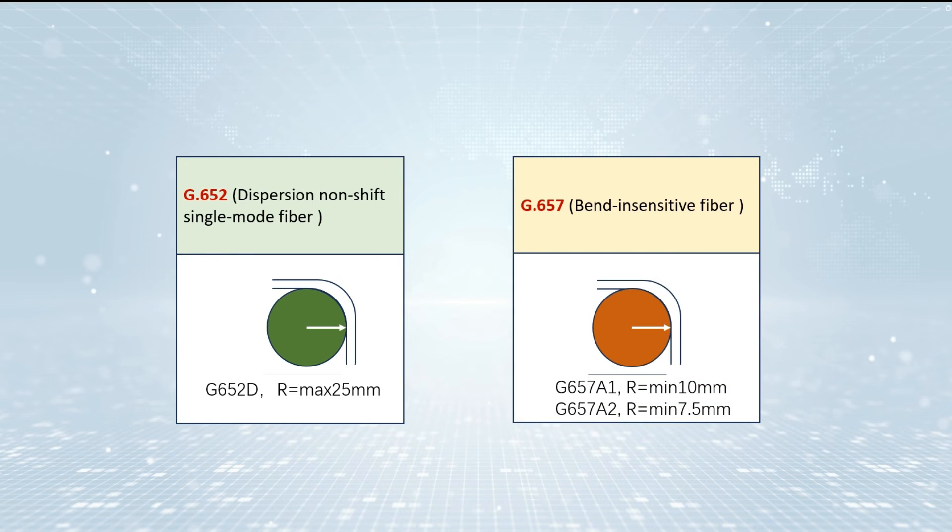G657 fibers are also known as bend-insensitive fibers, and their bend radii range from 5 to 10 millimeters, depending on the subcategory type. The minimum bending radius of G657A1 is 10 millimeters, and that of G657A2 is 7.5 millimeters.